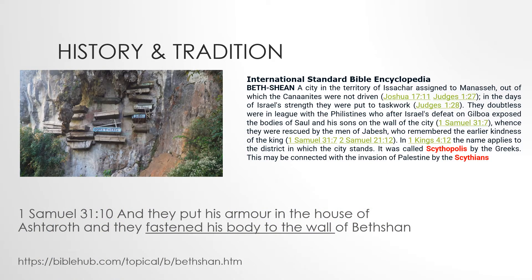This is a brief history with a picture from the Philippines showing that some people still practice certain customs in Asia. Bashan is a city in the territory of Issachar, assigned to Manasseh, out of which the Canaanites were not driven in the days of Israel's strength — they were put to task work. They were doubtless allied with the Philistines who, after Israel's defeat on Gilboa, exposed the bodies of Saul and his sons on the wall of the city.